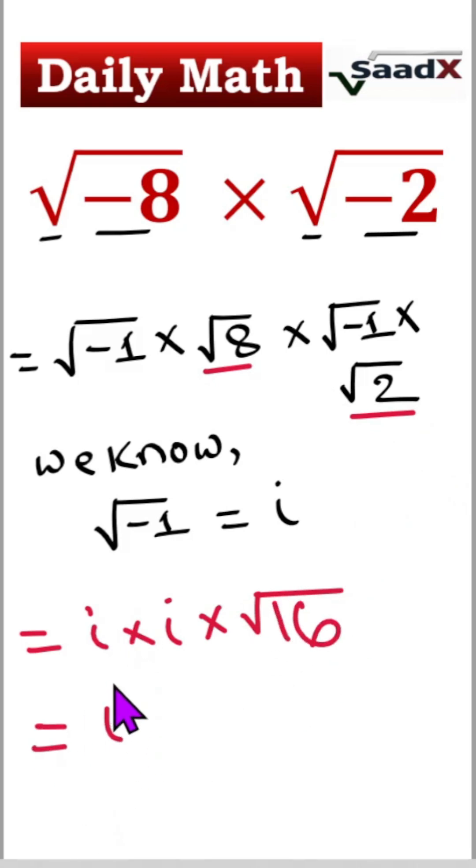Then, i squared times square root of 16, it means 4.